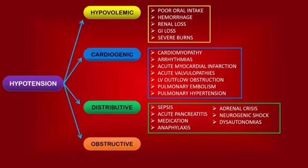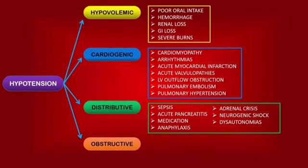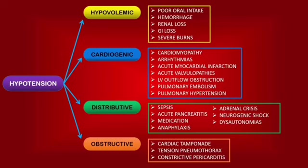For the final section, we will go over obstructive hypotension, which is caused by conditions that prevent the heart from pumping properly by obstructing the normal cardiac physiology. Remember that this is different from cardiogenic hypotension because organs other than the myocardium are the ones affected — the pathologies being external to the heart. In these patients, jugular venous pressure will be increased due to buildup of blood in the right atrium, the cardiac output will be reduced due to low stroke volume, and the systemic vascular resistance will be increased as compensation. The three main causes are cardiac tamponade, tension pneumothorax, and constrictive pericarditis — where fluid around the heart, increasing amounts of air in the thoracic cavity, or an immobile pericardium restrict the normal movements of the heart.